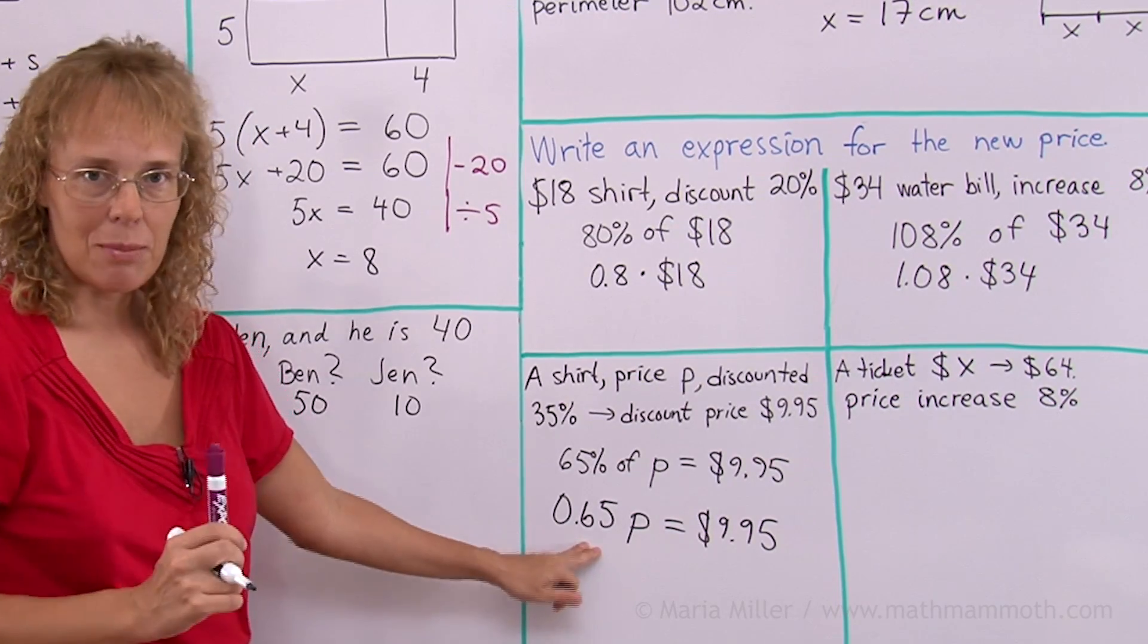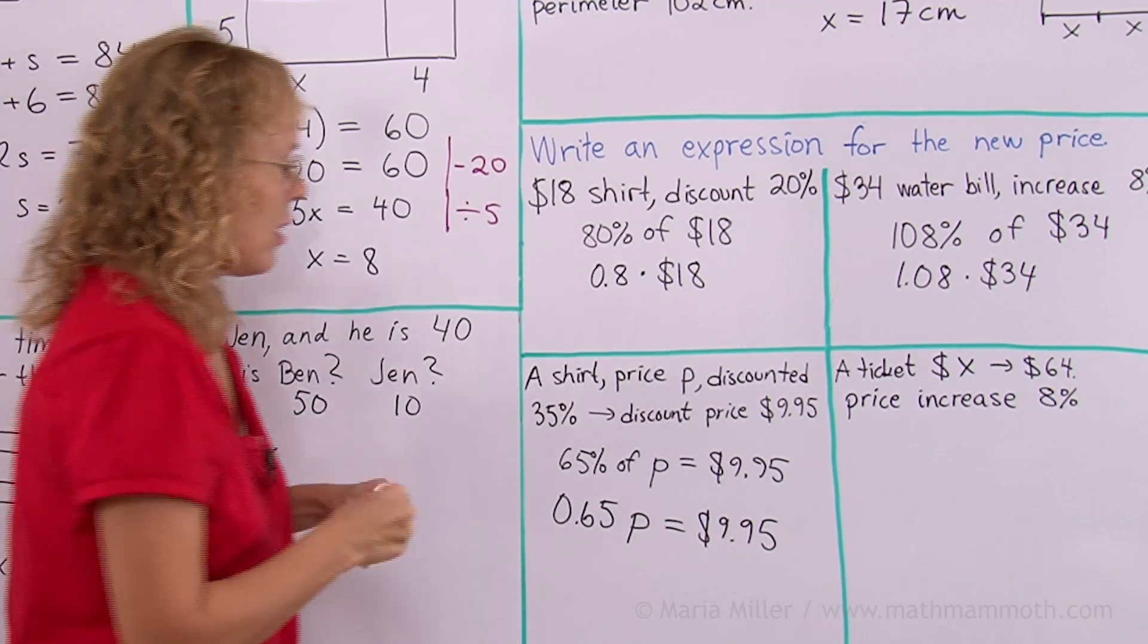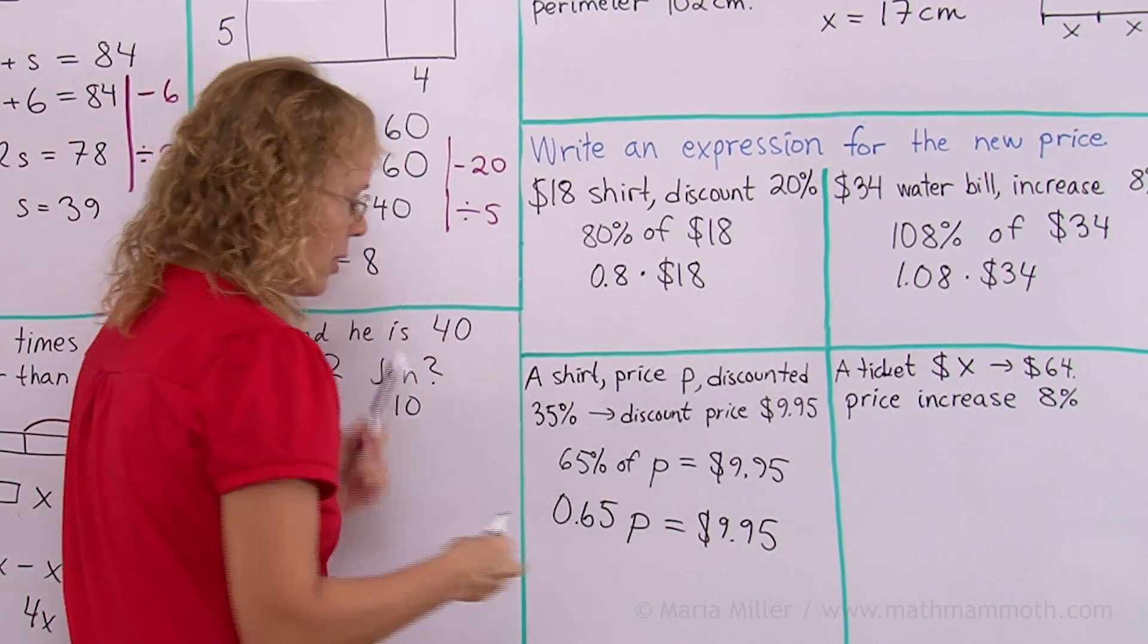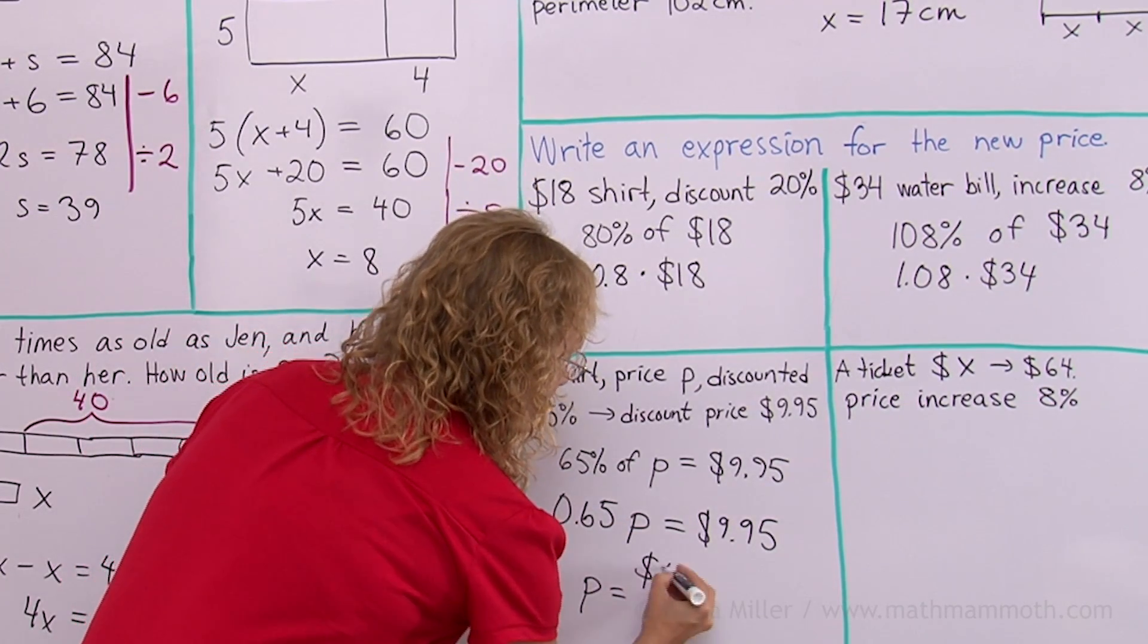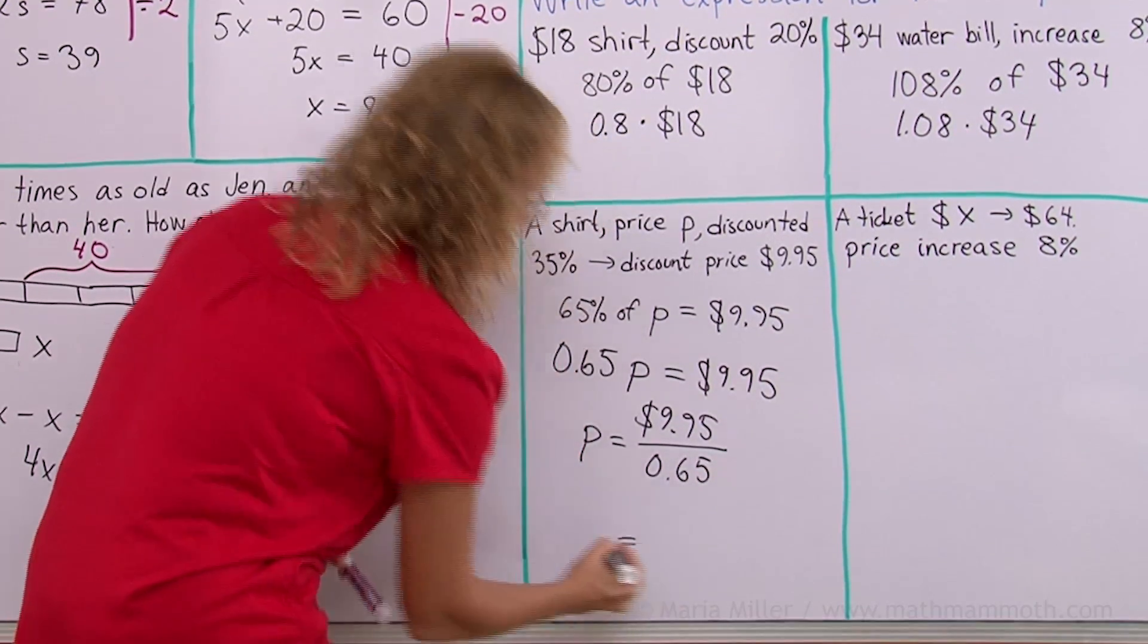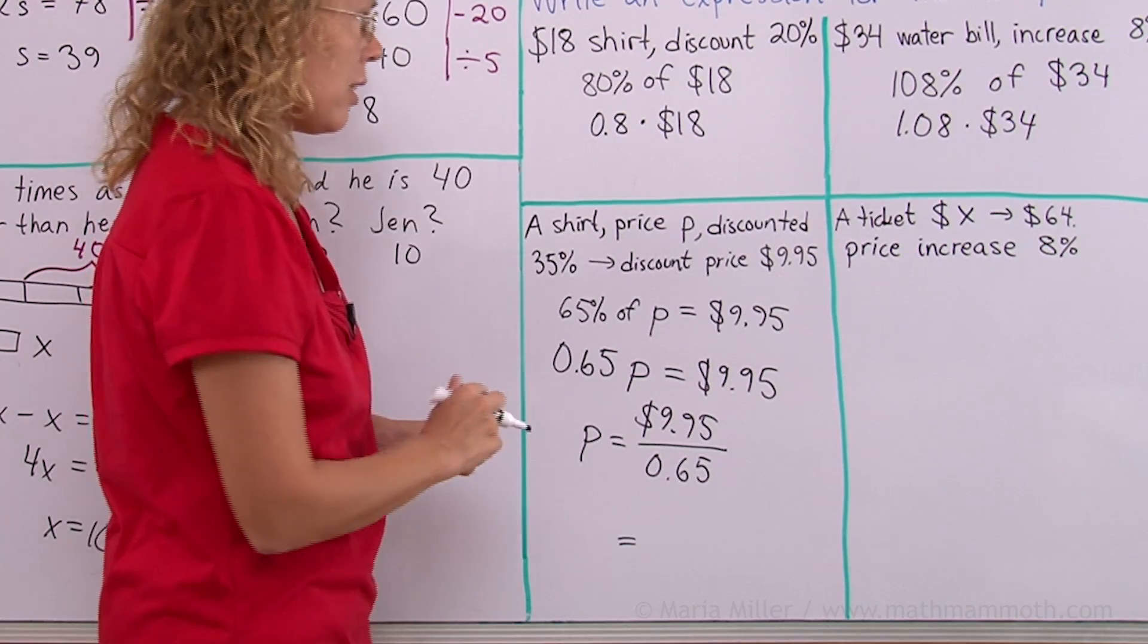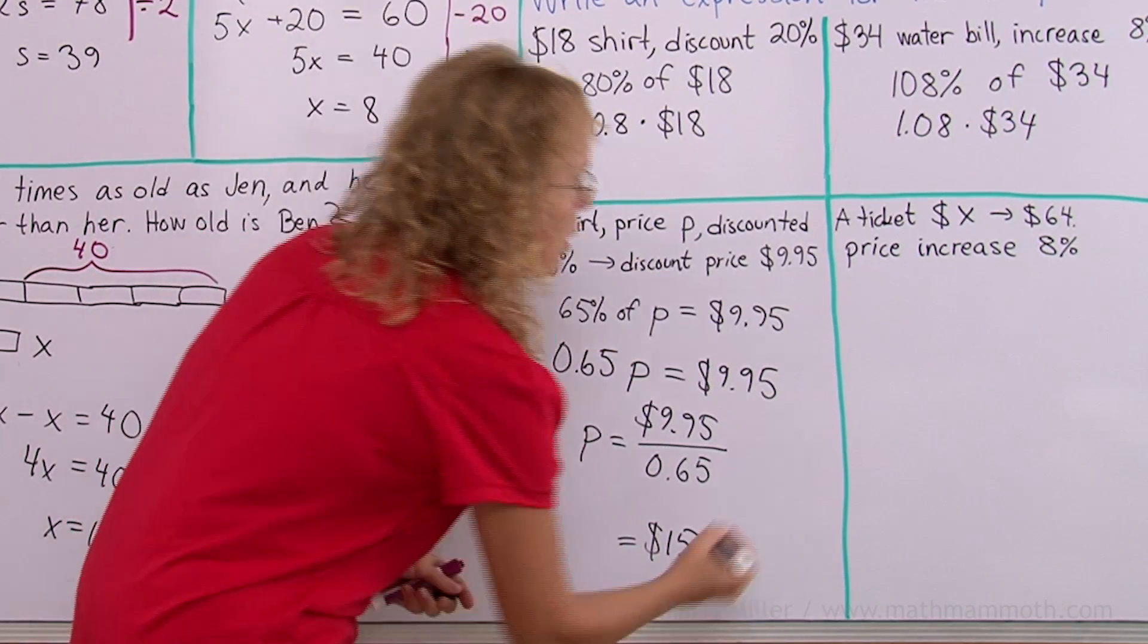And now this simple equation you solve by how? P is multiplied by some number. So you of course divide by that number. You divide both sides by 0.65. And P is then left alone. And on this side we get $9.95 divided by 0.65. And then you use a calculator to calculate that which I did. And we get $15.31.